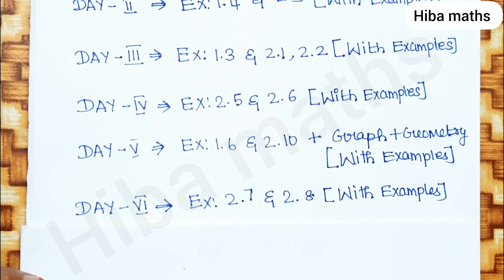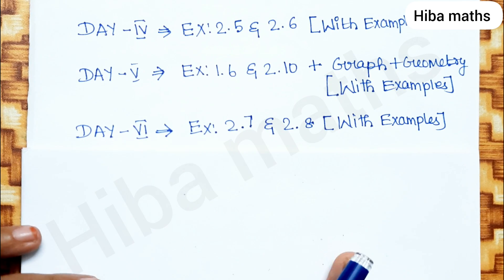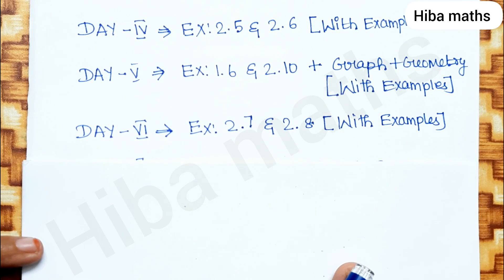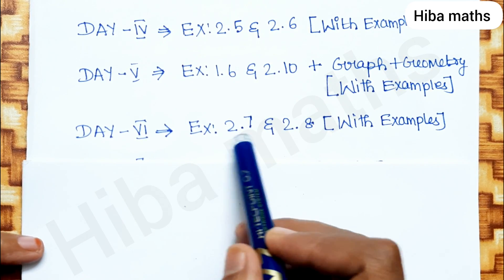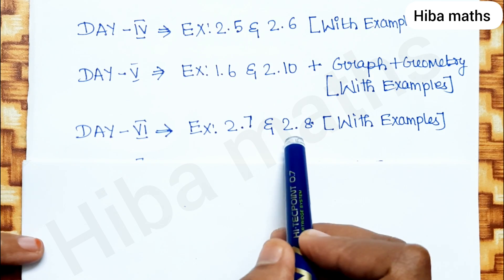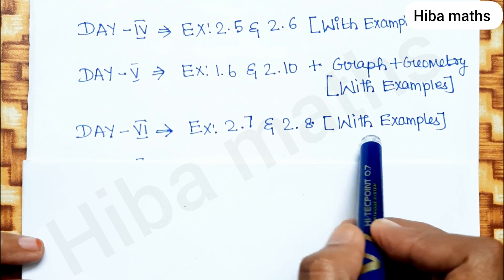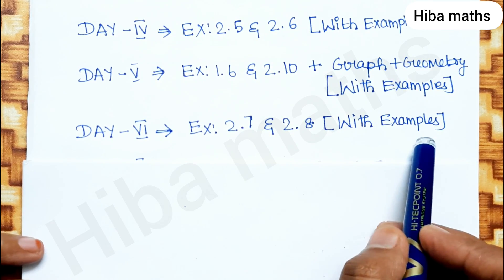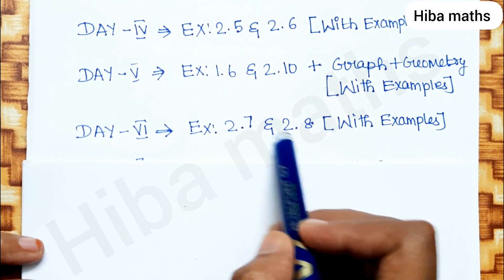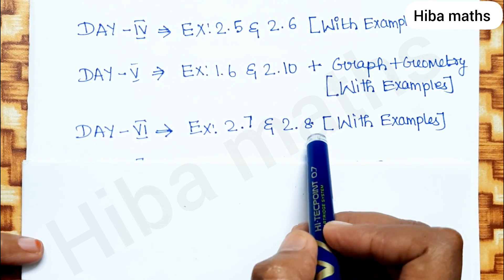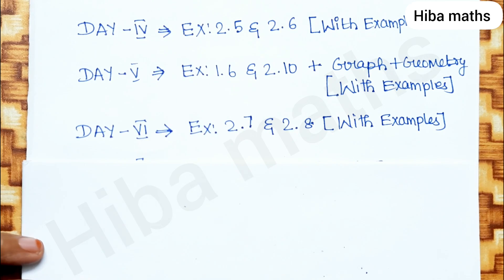Day 6: exercises 2.7 and 2.8 with examples. This covers GP — the sum of a geometric progression.